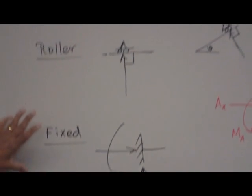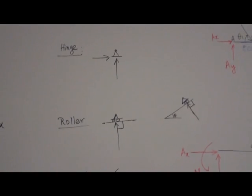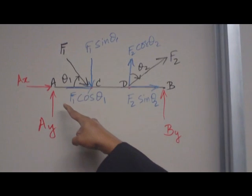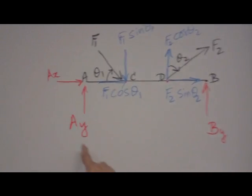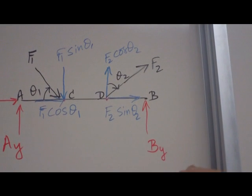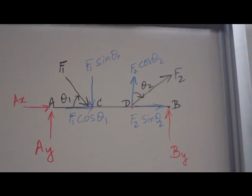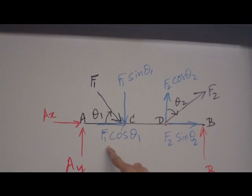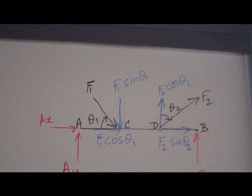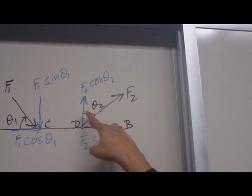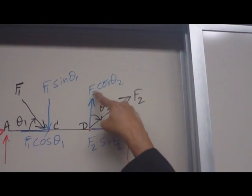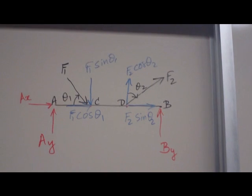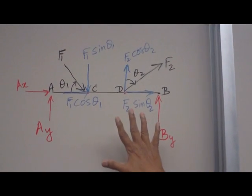So once you have the knowledge of all these hidden forces, it is easy to draw the free body diagram. For simply supported beam, you can see that at the hinge, we have two reactions, AX and AY. At the roller support, you have one reaction. Those are the hidden force. The visible force, F1, acting at an angle theta 1, measured from horizontal. So the horizontal component is cosine, vertical is sine. Whereas force F2, measured from vertical axis, so vertical component is cosine, horizontal component is sine. So once you resolve all the inclined force and show all the reactions, that completes the free body diagram.